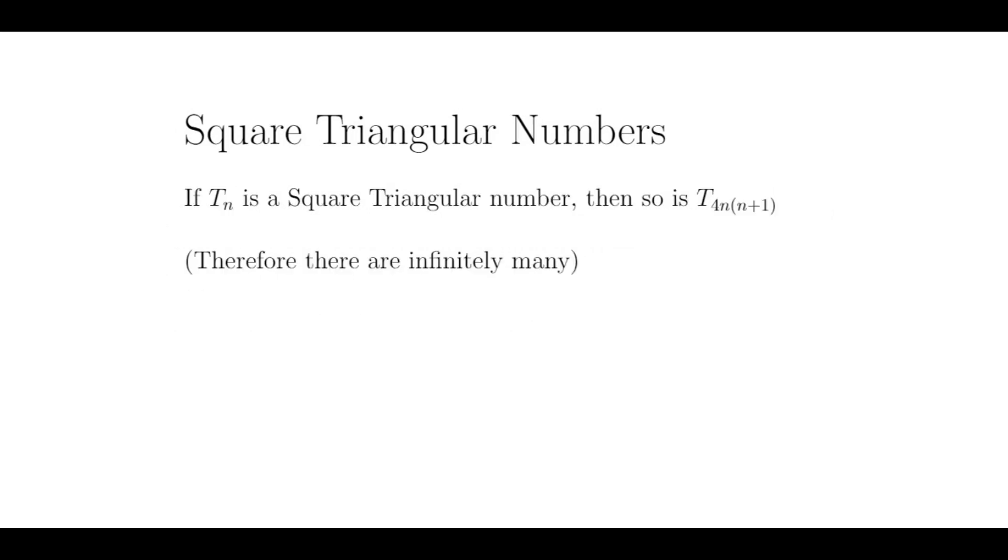In fact, there are infinitely many square triangular numbers. This is because given any square triangular number, I can always find a larger square triangular number. Specifically, if Tn is a square triangular number, then T4n times n plus 1 is also a square triangular number.